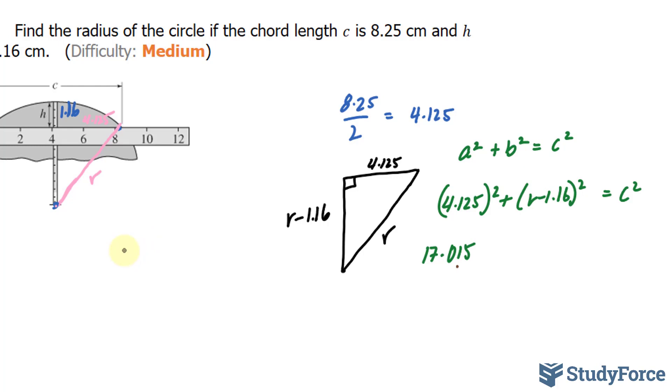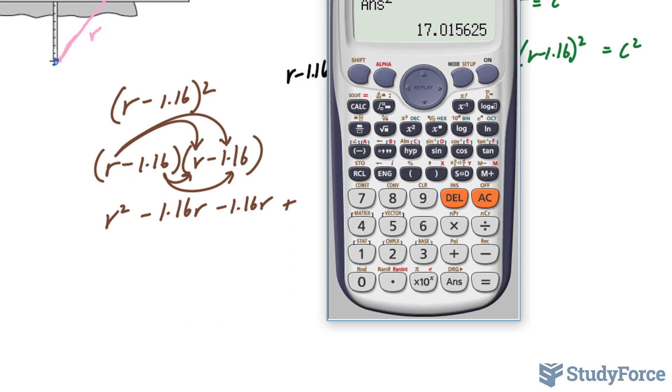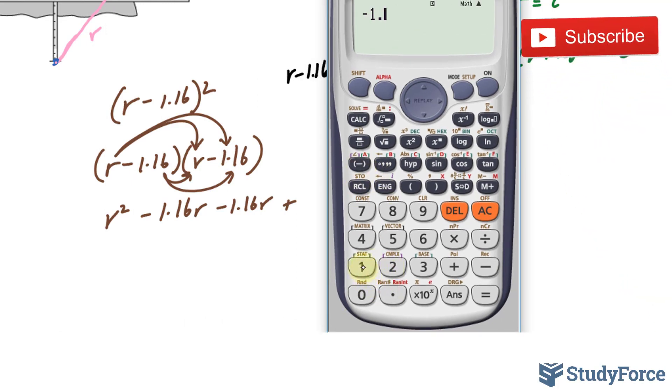Over here we have a binomial, r minus 1.16 raised to the power of 2. We have to expand. So we have r minus 1.16 bracket r minus 1.16. You can expand it like this where r times these two terms. That gives you r squared minus 1.16r and the same thing for this term, minus 1.16r plus whatever the product of negative 1.16 times negative 1.16 is.